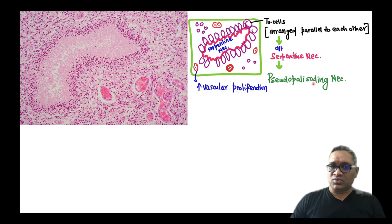Pseudopalisading necrosis is diagnostic of glioblastoma. You can see small blood vessels which are proliferating in variable shapes and sizes. These are proliferating blood vessels because glioblastoma is a highly vascular tumor. Keep learning, enjoy learning.